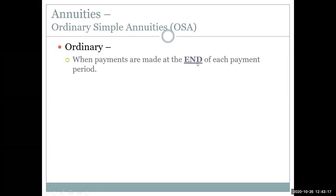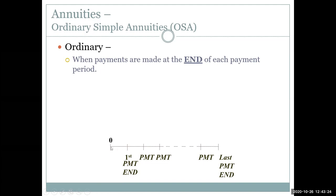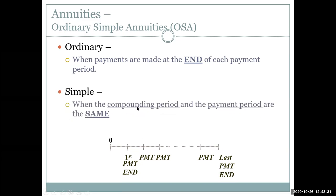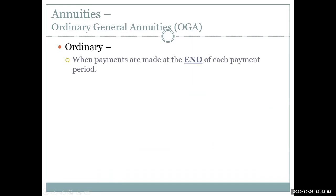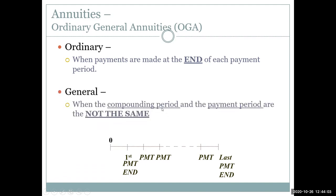For ordinary simple annuities, 'ordinary' means payments are made at the end of each payment period. On a timeline, the first payment is at the end of the first period. 'Simple' means the compounding period and payment period are the same — for example, monthly payments with a j12 rate, so the compounding and payment period both match monthly.